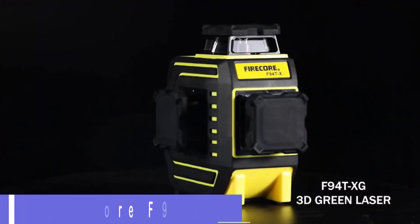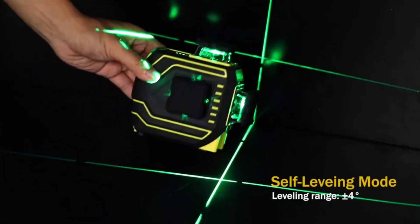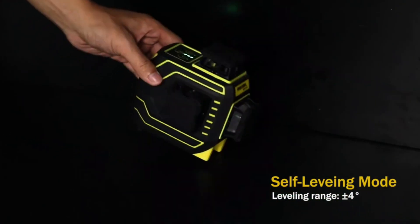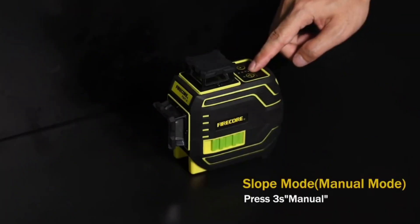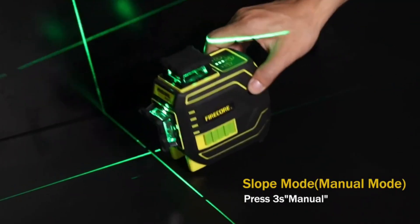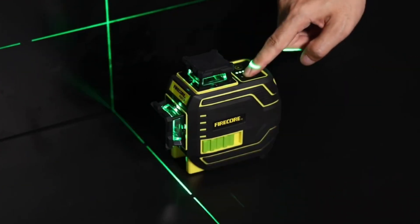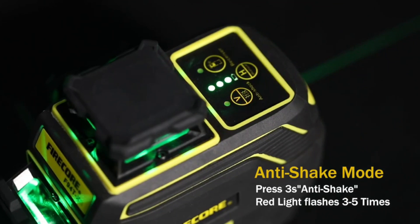Number 4, Firecore F94TXG Laser Level. The F94TXG is a laser level with exceptional accuracy, providing precise measurements for various tasks such as construction, hanging pictures, and installing shelves. Its self-leveling technology ensures perfect alignment, even on uneven surfaces. The laser level has a working range of up to 25 meters, and with optional detectors, it can extend to 50 or 60 meters.